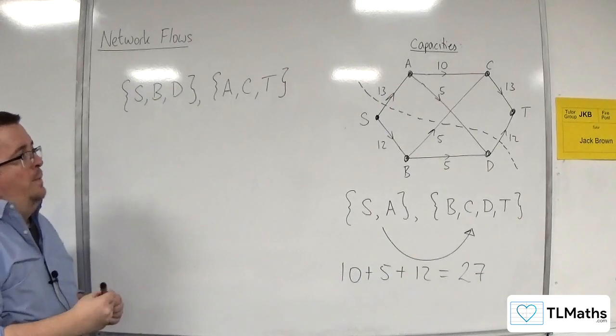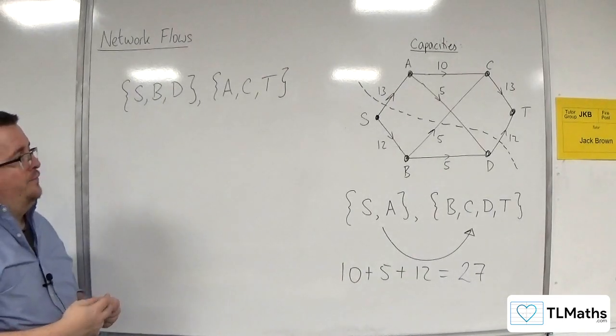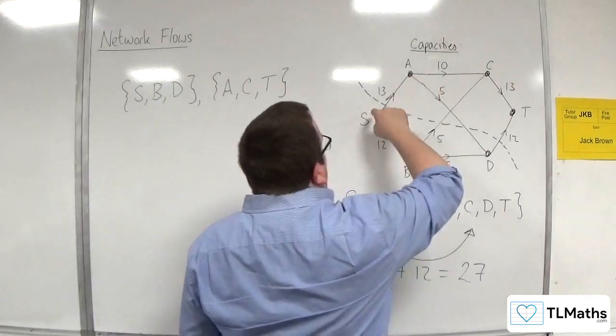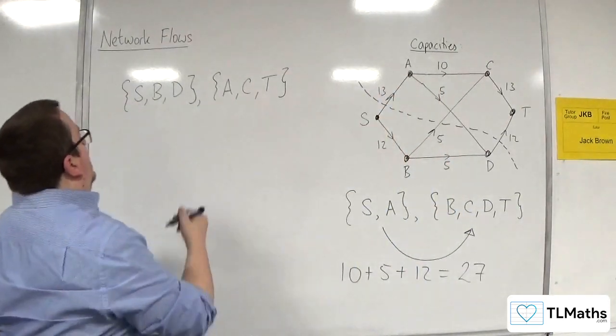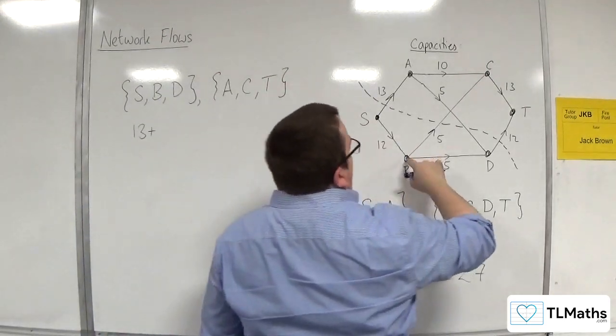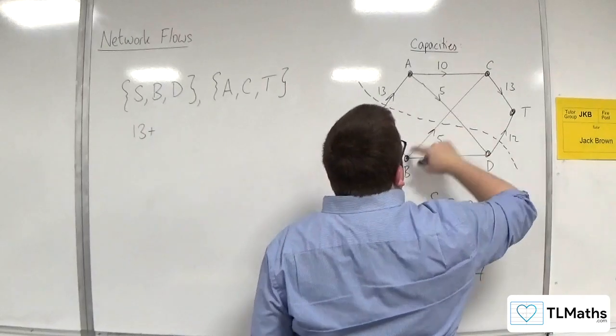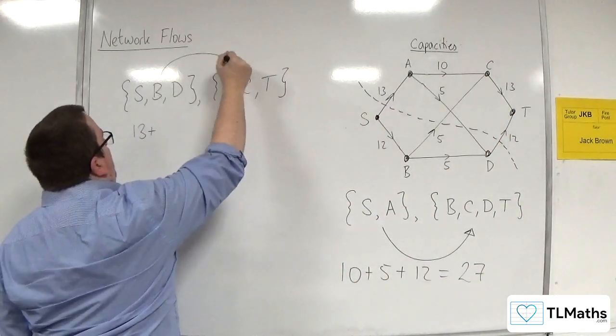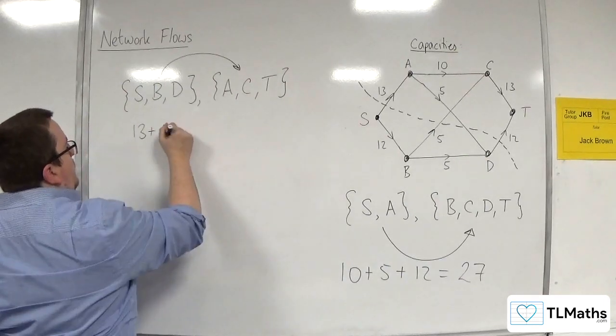So what would be the value of that cut? Well, you've got S to A. That's going from the source set to the sink set. So you'd have 13. You've got B going to C, source set to sink set. So remember, we're going from that to that. So 5 would be included.